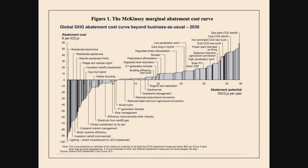Now let's talk about marginal abatement costs. This is a figure from a report from McKinsey Consulting, where I'm looking at the global marginal abatement cost function. The marginal abatement cost is that incremental cost of reducing greenhouse gas emissions.